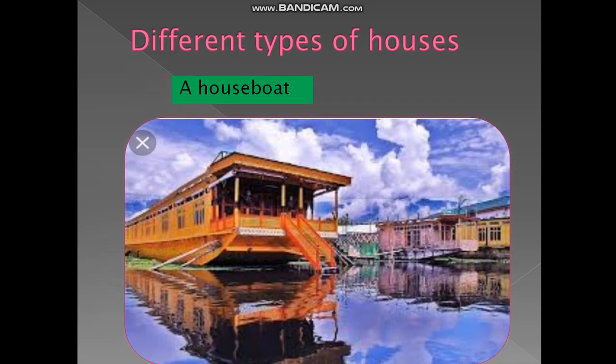What are the different types of houses you can see? The first one is a houseboat. Where can we see houseboats? In Kashmir and Kerala, most people live in houseboats. It floats on the water and can move. It is very beautiful, and it has all the facilities — bedroom, kitchen, balcony — everything will be there.